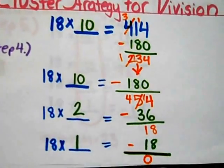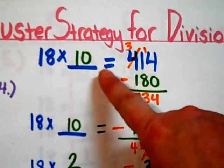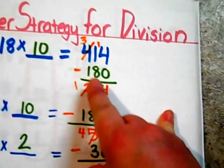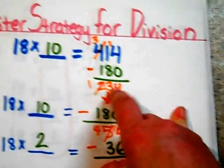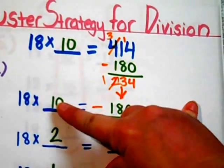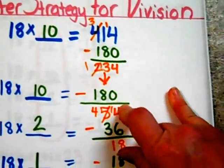Repeating until you get to the lowest form. Here is where we were at. 18 times 10 is 180. 18 times 10 again is 180.